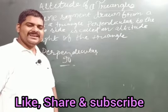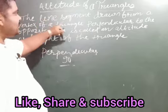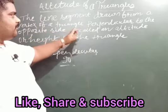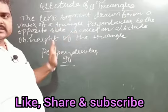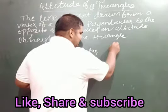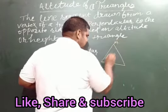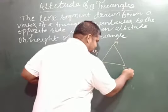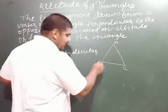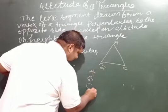My dear student, regarding the altitude of triangles: the line segment drawn from a vertex of a triangle perpendicular to the opposite side. Here, in triangle ABC, this triangle has three vertices: A, B, and C.